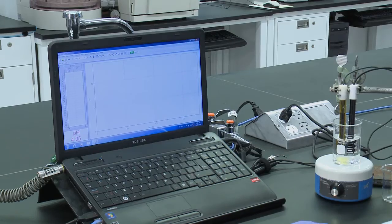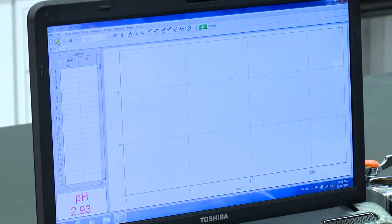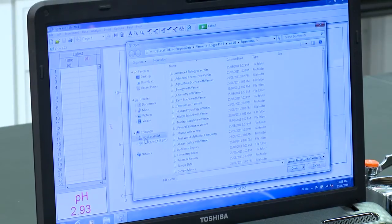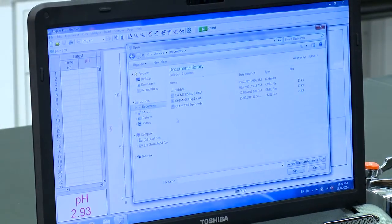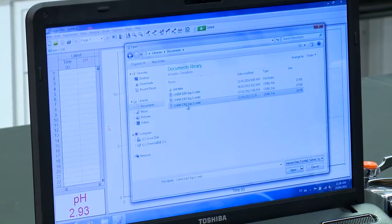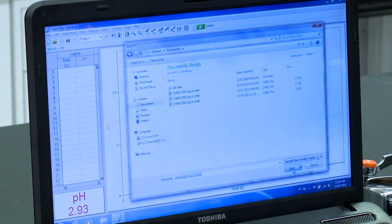And then you want to ensure that the correct program has been loaded by clicking on Open, going to Documents, and then opening the Chem 2302 Experiment 2 file.